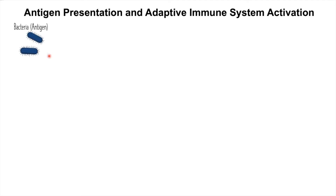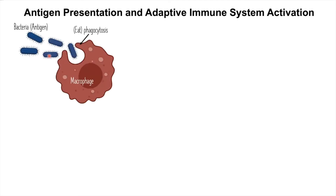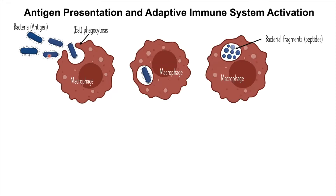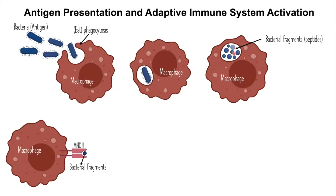When there is a bacterial infection, the macrophages, which are excellent antigen-presenting cells, will recognize the bacteria, eat it, and degrade it into fragments called peptides. After that, the macrophages will load these peptides on molecules called major histocompatibility class II molecules and show them on its surface.